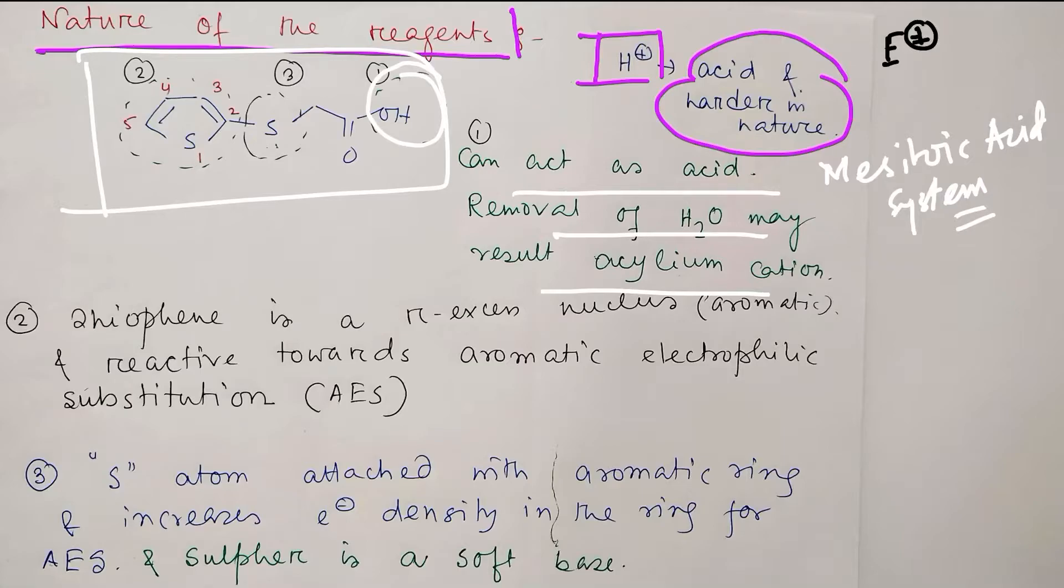Second, this thiophene part - if you look at this part, actually this is a C2-substituted thiophene. Actually thiophene is a pi-excess nucleus.